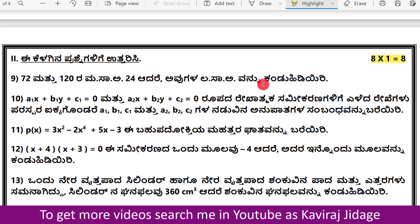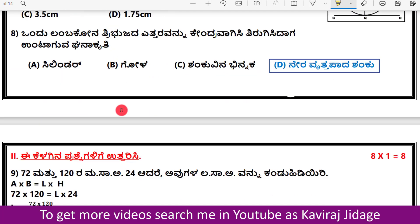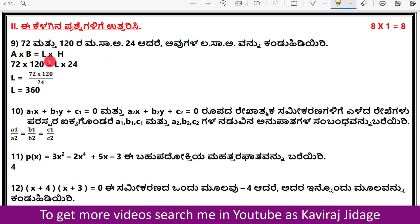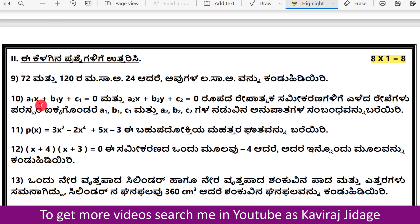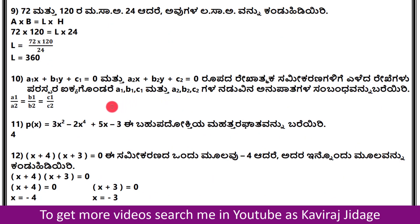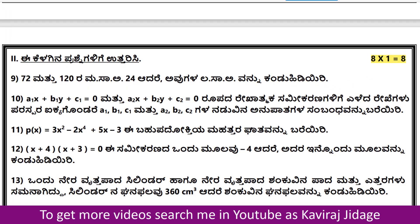For a pair of linear equations a1x + b1y + c1 = 0 and a2x + b2y + c2 = 0, we examine the relationship between the coefficients a1, b1, c1 and a2, b2, c2. The condition is: a1/a2 equals b1/b2 equals c1/c2 for the lines to be coincident.